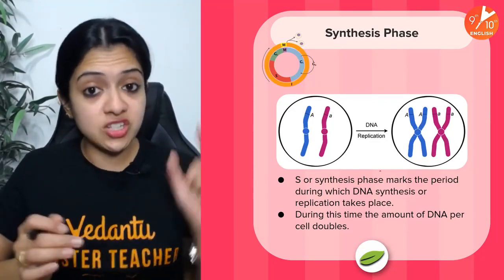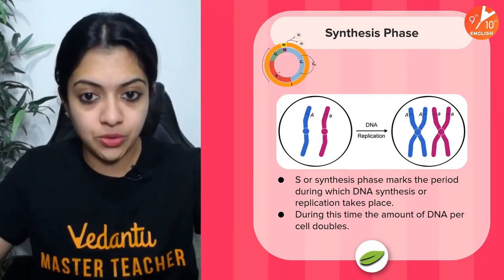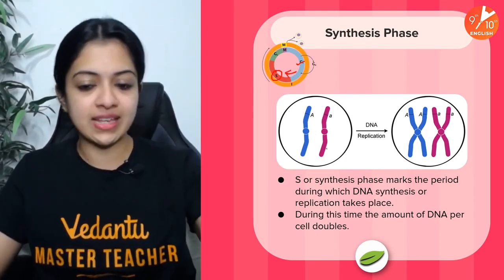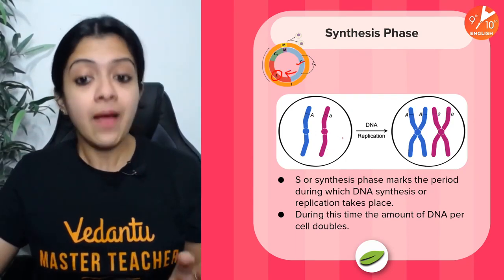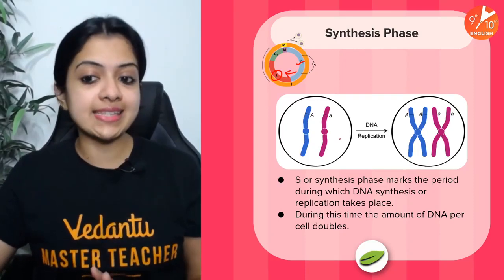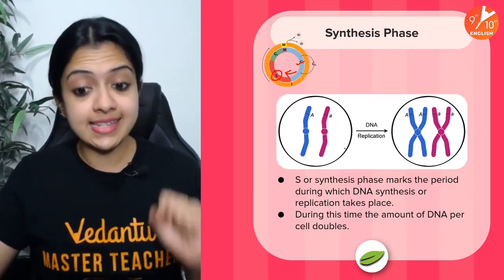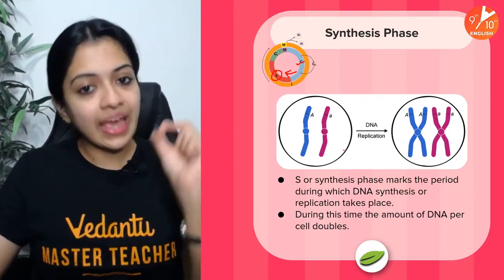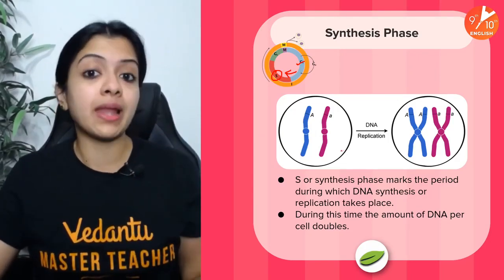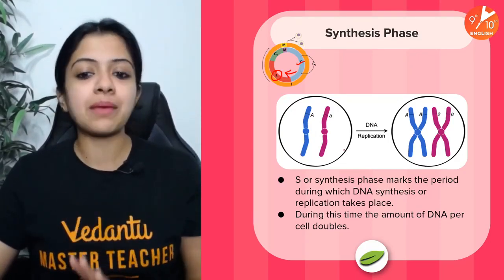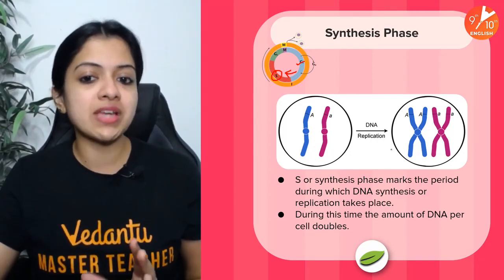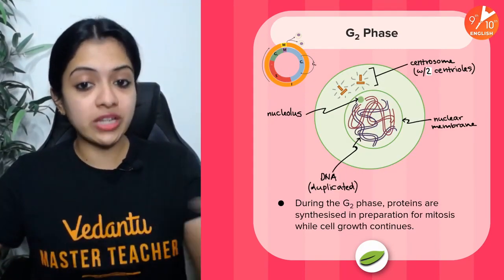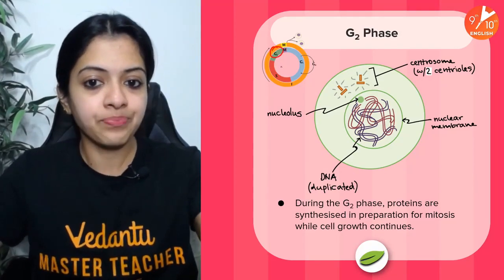After G1 comes the S phase — S stands for synthesis. What is being synthesized? DNA synthesis is happening here. During this time, the amount of DNA per cell doubles. True to its name, DNA replication occurs in the synthesis phase.